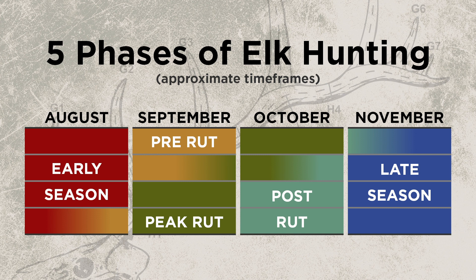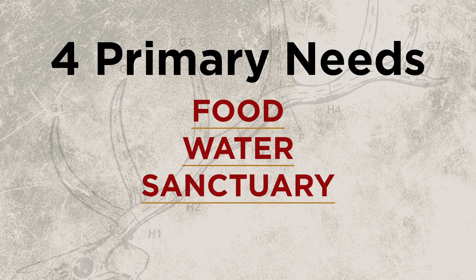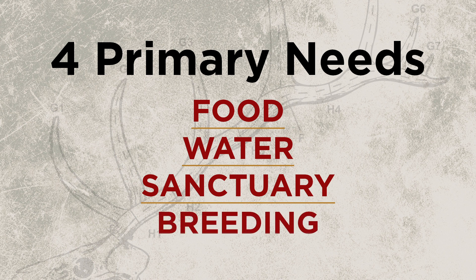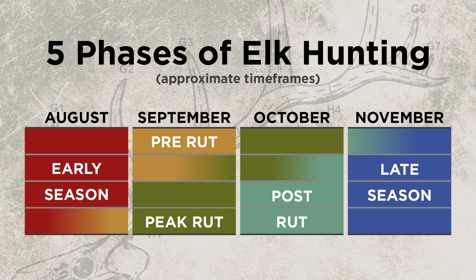Before we can talk about the five calendar periods, we have to talk about the four basic needs of elk. Three are permanent needs and one is a temporary need. Those three basic permanent needs are food, water, and what I call sanctuary. The fourth need is seasonal — it's the breeding need. It's that need at that time of year, or in that calendar period, that drives where the elk will be and where you will find them.